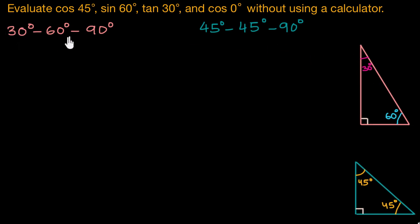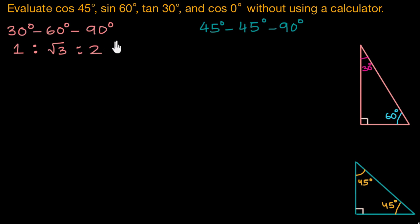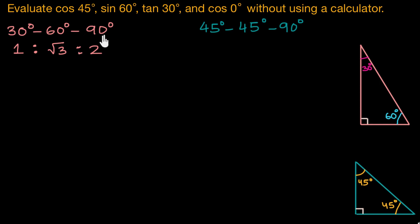The ratio between the sides of a 30-60-90 triangle is 1 : √3 : 2. This means if the side opposite to the 30 degree angle is 1 unit, the side opposite to the 60 degrees would be √3 units, and the side opposite to 90 degrees would be 2 units long.